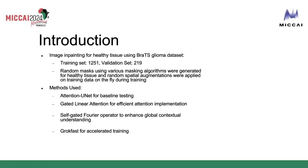We applied random spatial augmentations during training on the fly. We tested various methods such as attention unit for baseline testing, gated linear attention for efficient implementation of vision transformers, and self-gated Fourier operators to enhance global contextual understanding. We also further tested GANs for our implementation, and tested GrokeFast, which is a new algorithm that allows for accelerated training and convergence.